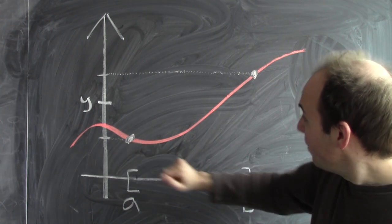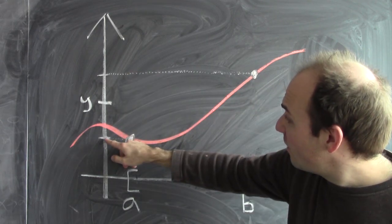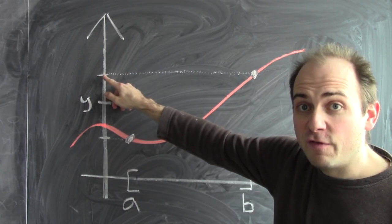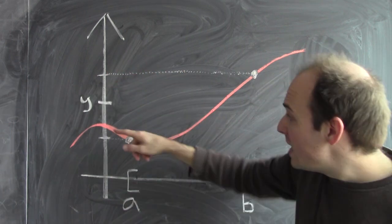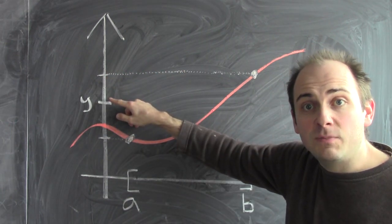Here is the point a, f of a. Here's the point b, f of b. And on the y-axis, I've got the value f of a and the value f of b. Now, in between f of a and f of b, I've just picked some random value, calling it y.